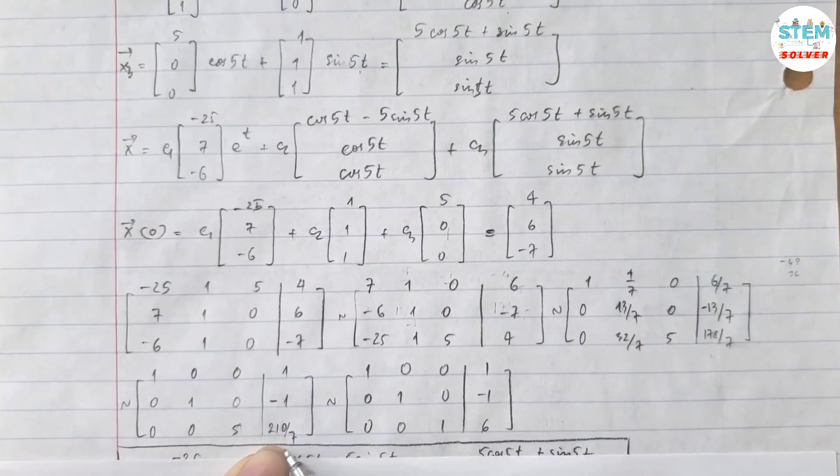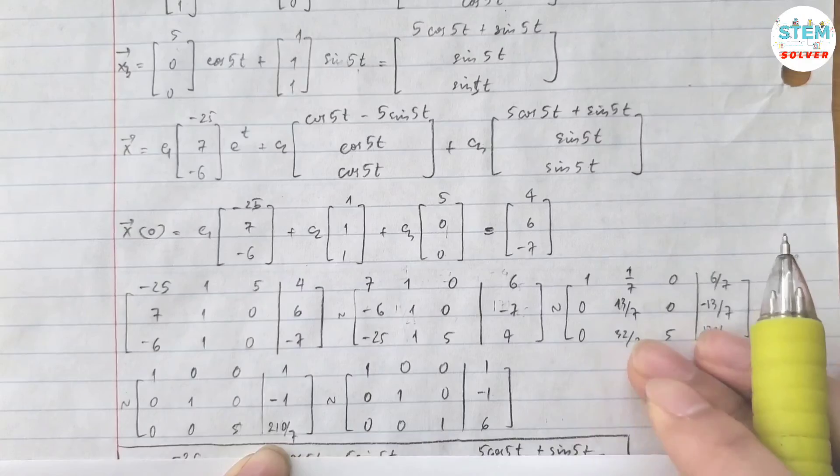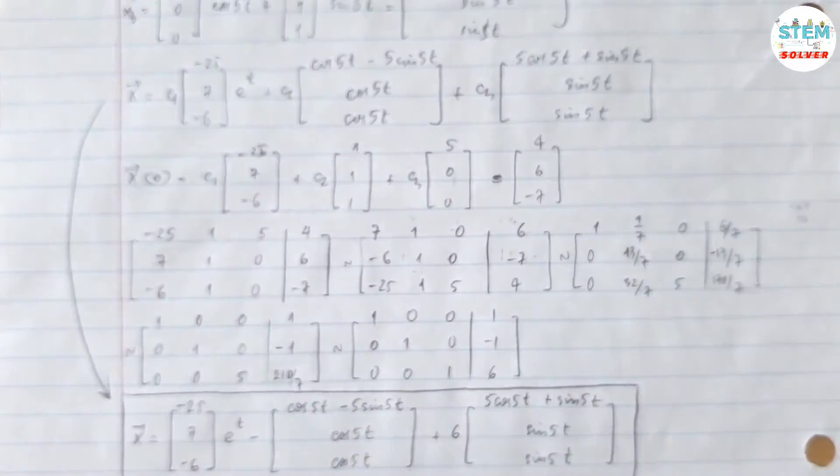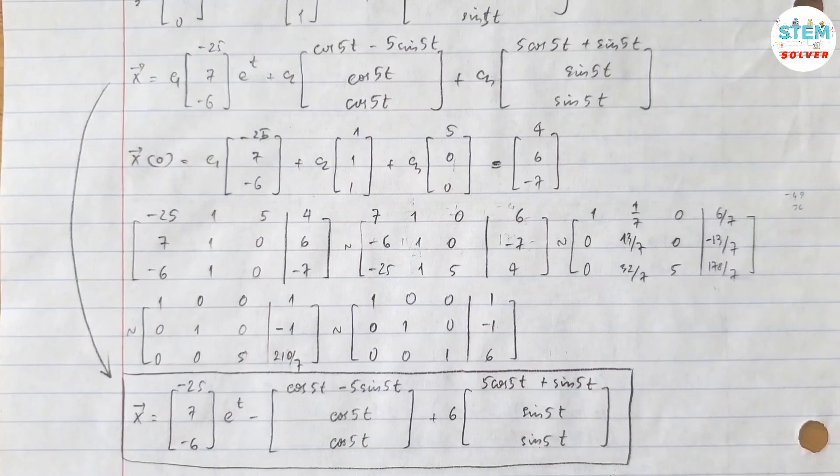Once you reduce it down to a base matrix, you will get c1 equals one, c2 equals negative one, c3 equals six. So from this equation, now it becomes this. So that's it.